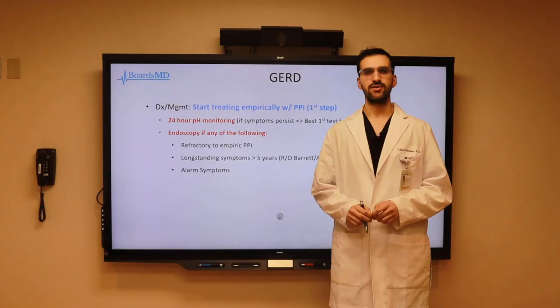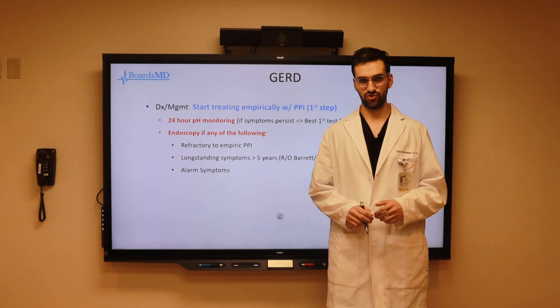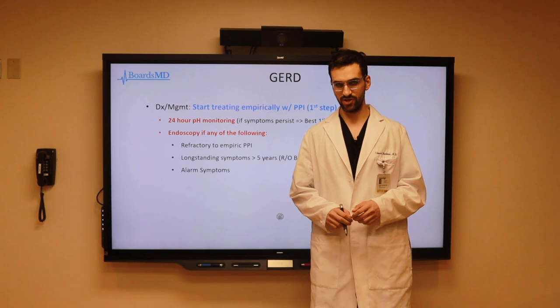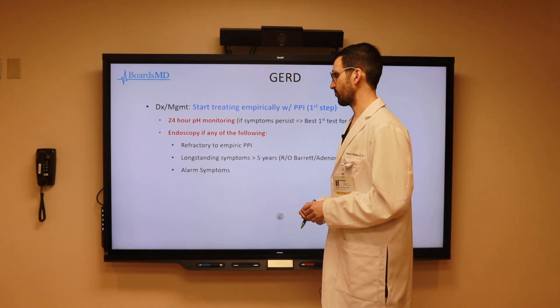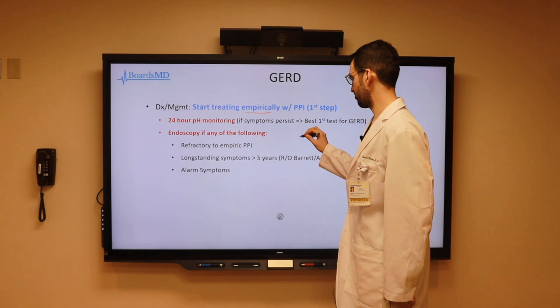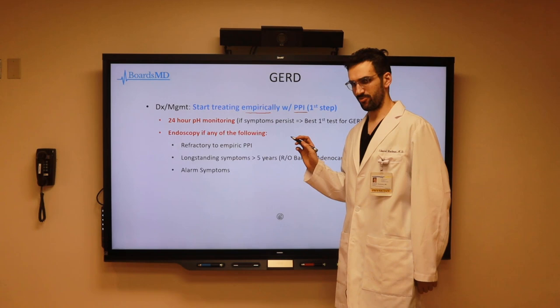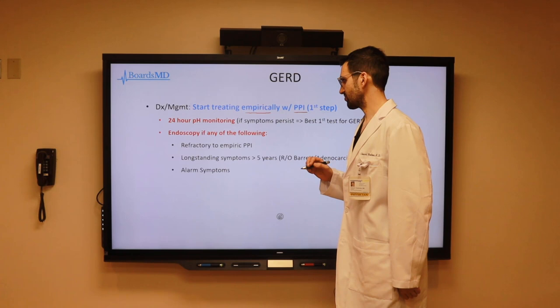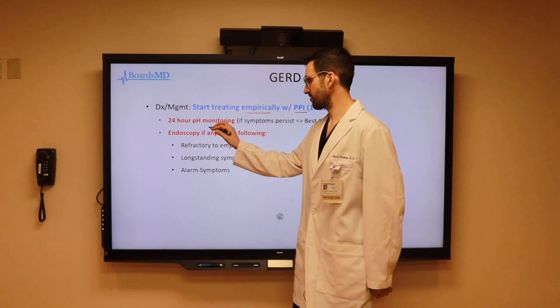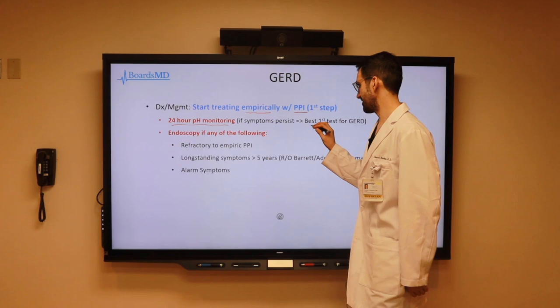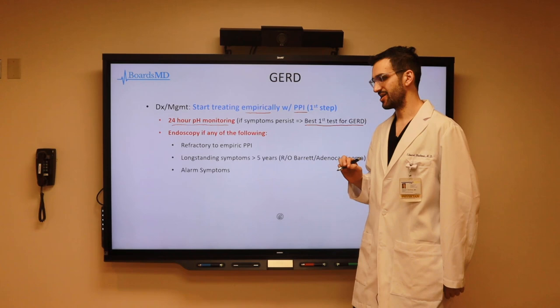Now that we've discussed the pathophysiology and potential complications of GERD, let's delve into the diagnosis, workup, and management. The key is that we are going to start treating patients empirically in most cases with a proton pump inhibitor (PPI). This is going to be the first step in management in the majority of patients with suspected GERD. If patients go on to be refractory to PPIs, we can perform 24-hour pH monitoring, which is considered the best test for actually evaluating whether the patient has GERD.